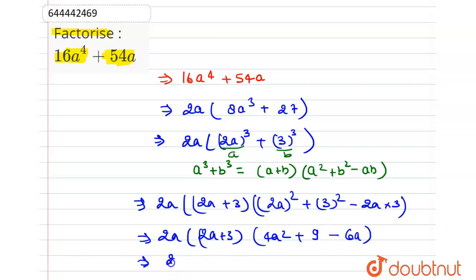So this will be the factorization of 16a to the power 4 plus 54a because on multiplication of these factors we will have the same that is 16a to the power 4 plus 54a.